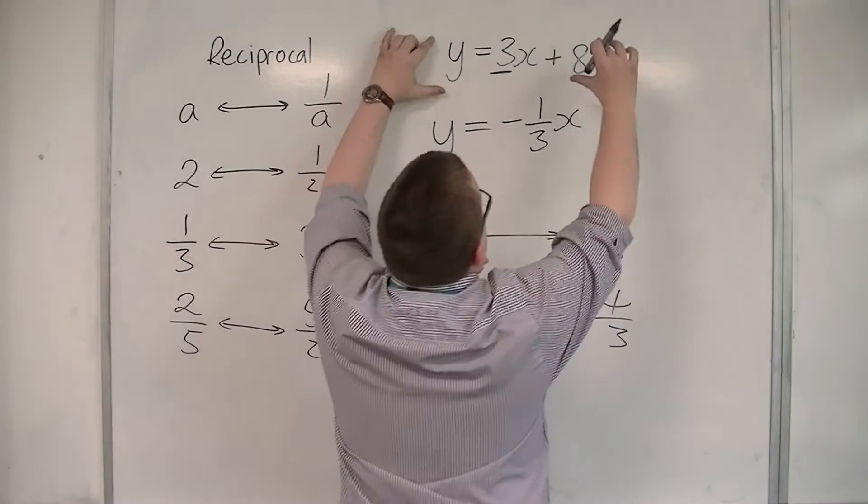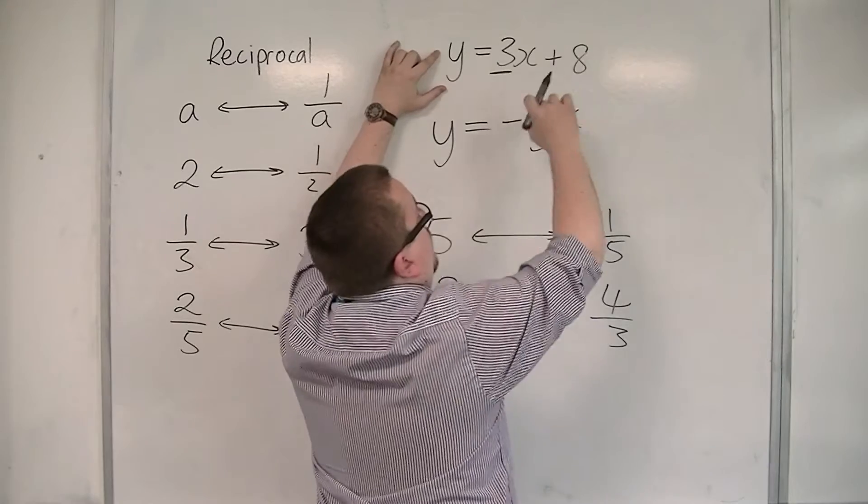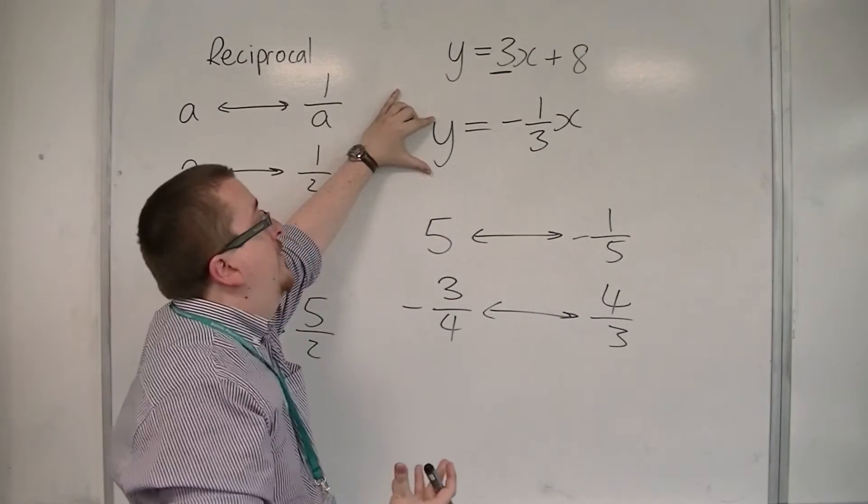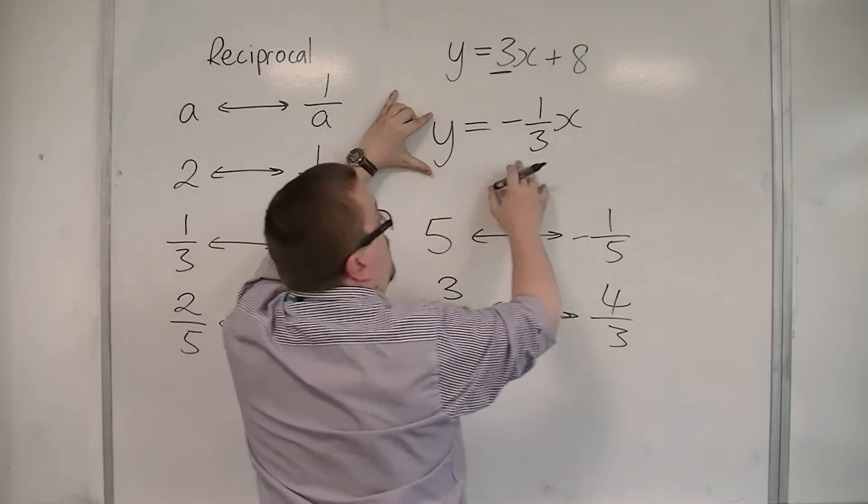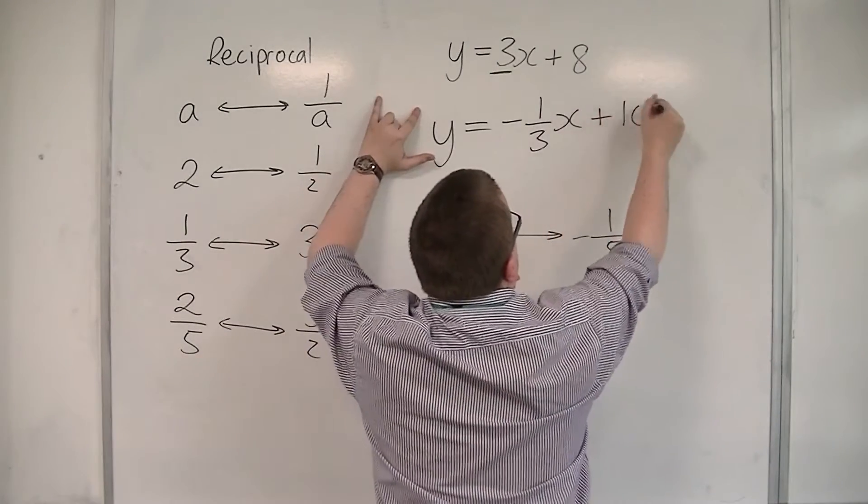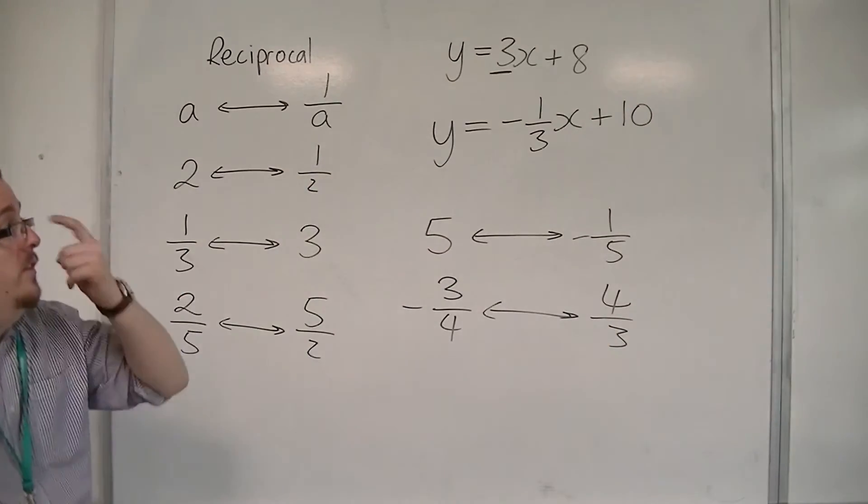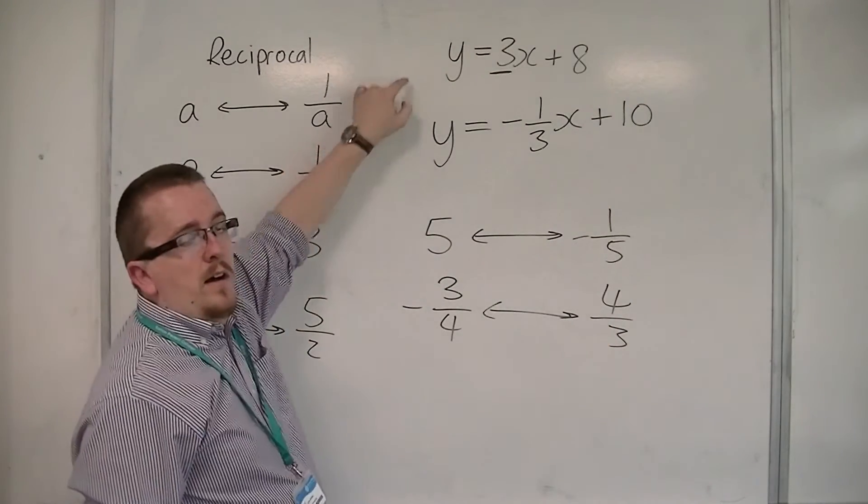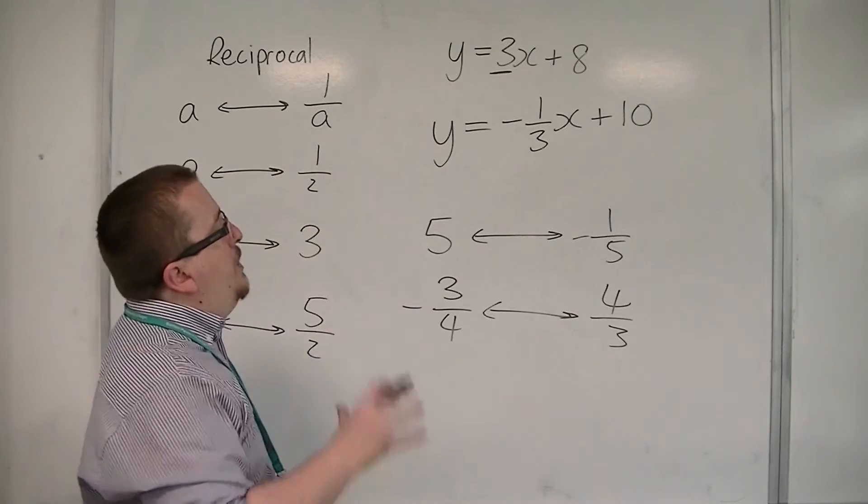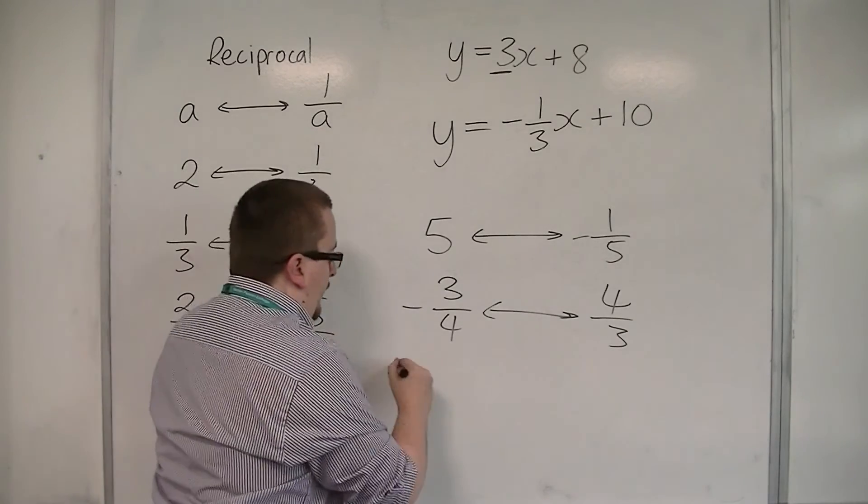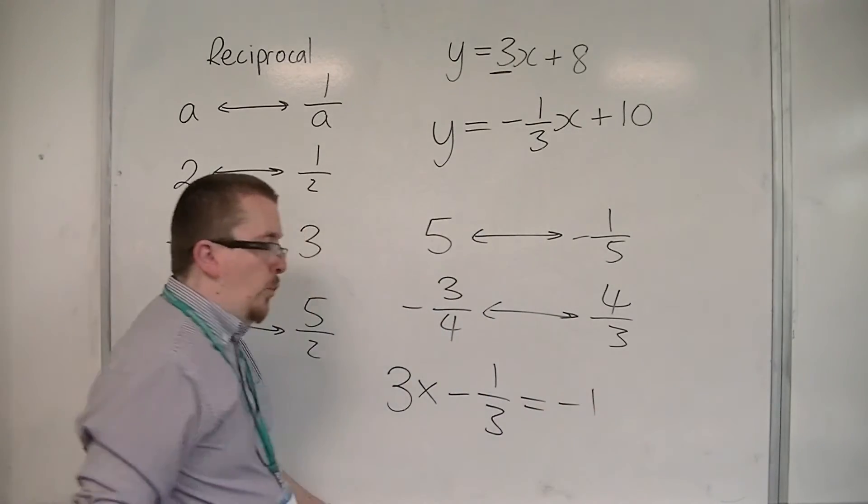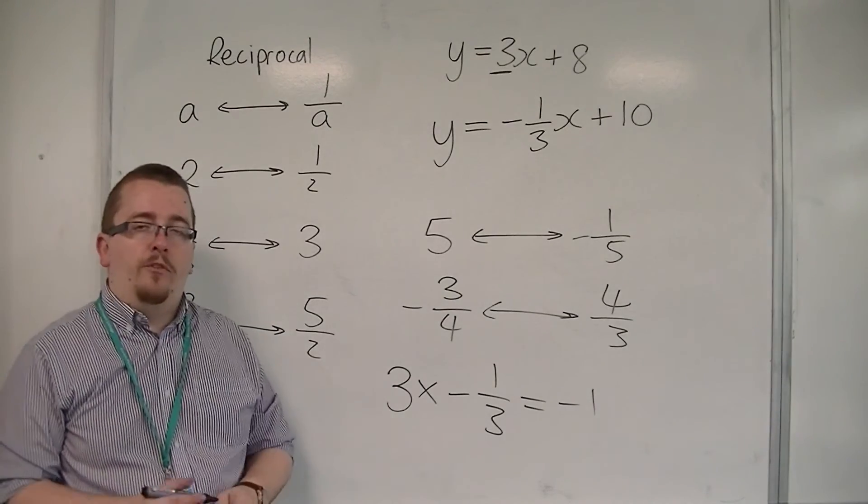And so, if y is equal to 3x plus 8 is the line we're dealing with, then a line that is perpendicular to it would be y is equal to minus 1 third x plus any other number. So let's say it's plus 10. These two lines are then perpendicular. And you can show that because the two gradients multiply together to make minus 1, as we saw in the previous video.